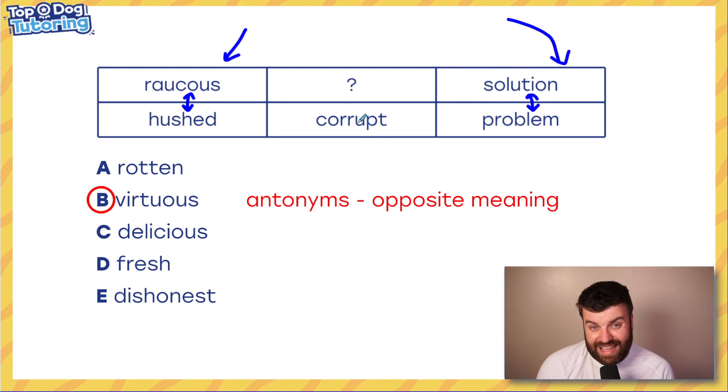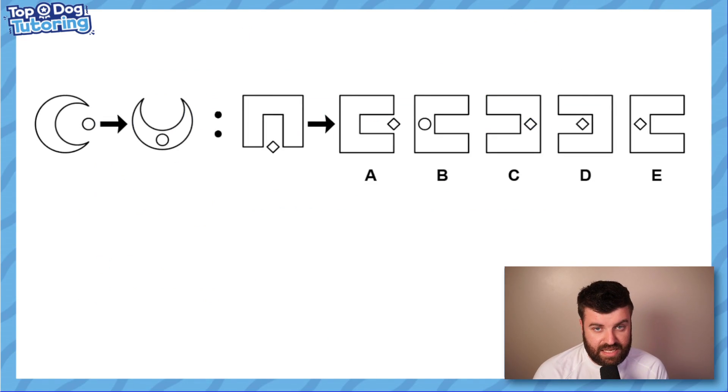So the opposite of corrupt, again, this is high-level vocab we might get in the 11 plus. Virtuous is the opposite of corrupt. Virtuous means truthful, right, correct. Corrupt means wrong, lying, terrible. So they're opposites. That was a high-level one there to sink your teeth into.